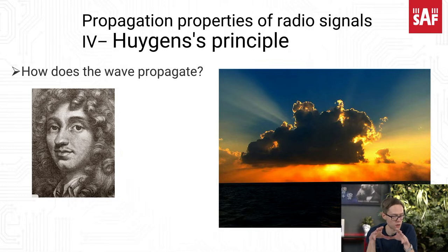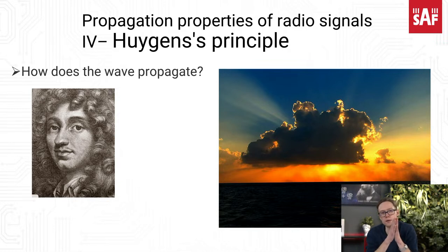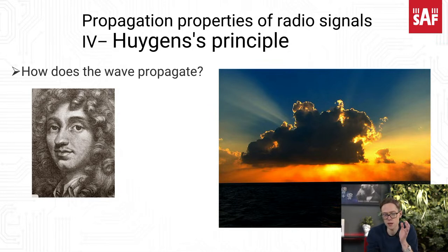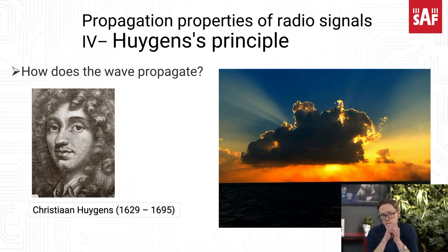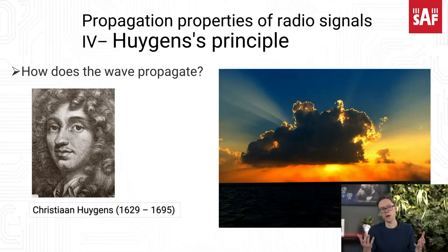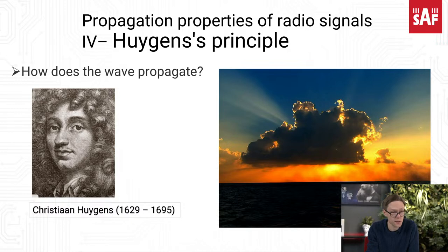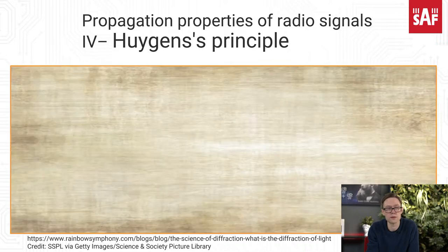This man partially answered this question back in the 17th century. He laid the basis for fully answering this question, and the full answer was given more than a century later. But we cannot underestimate this basis. His name is Christian Huygens, he lived in the 17th century, and he made the first steps in understanding the nature of waves and wave propagation — namely light propagation, and any other electromagnetic wave as well.